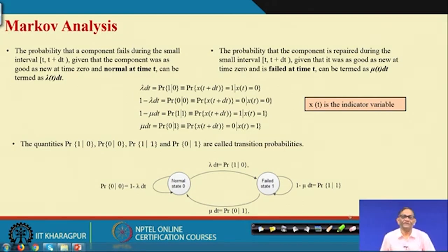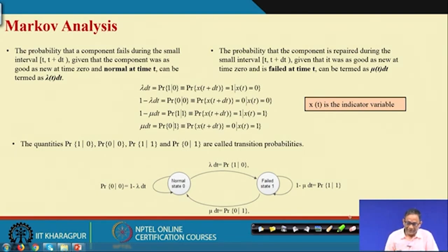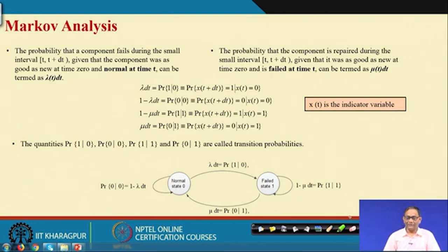The Markovian Process and Exponential Distribution are very much related. It is basically the method which deals with state transitions and then, finally, the steady-state probability values.